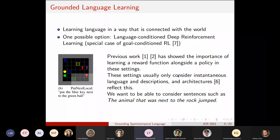And these settings usually only consider instantaneous language and descriptions, and the architectures, the deep learning architectures used in these agents reflect this. And in this work we are doing now, we want to be able to extend these settings to consider sentences with a temporal aspect.